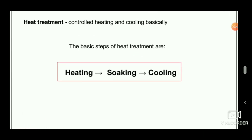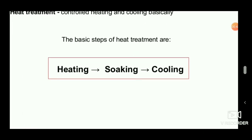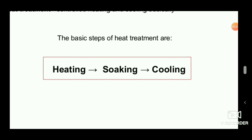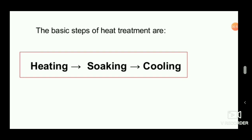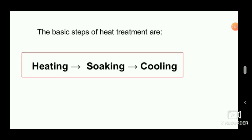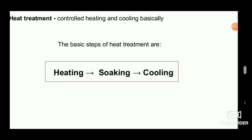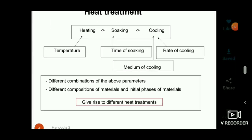Heat treatment involves three basic processes: heating, soaking, and cooling. Heating is bringing the metal up to a particular temperature. Soaking is maintaining that specified temperature for a period of time — for example, if you want to heat the metal at 700 degrees Celsius, you maintain that temperature for some period. Then the metal is cooled to normal temperature.